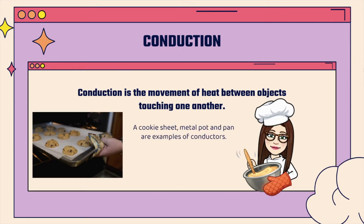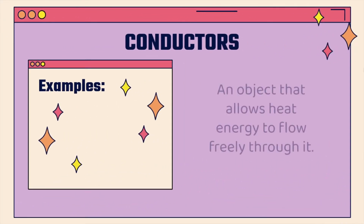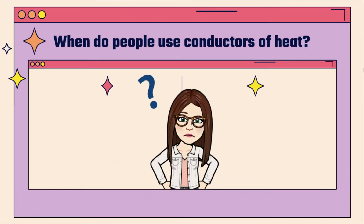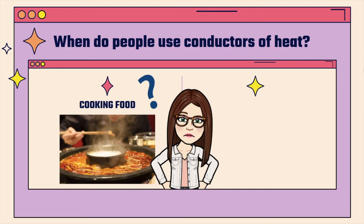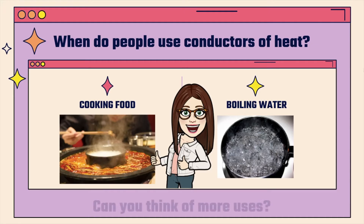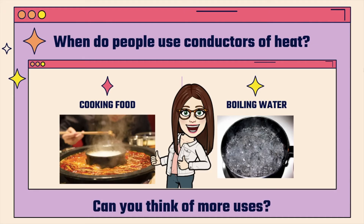A cookie sheet, metal pot, and pan are examples of conductors. An object that allows heat energy to flow freely through it is called a conductor. Examples of conductors include aluminum foil, copper wire, steel, glass, and silverware. People use conductors when they are cooking food and when they are boiling water. I also use a curling iron, which is a conductor of heat as well.